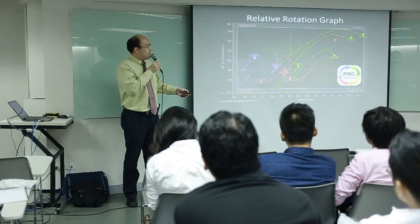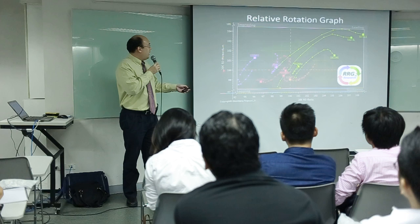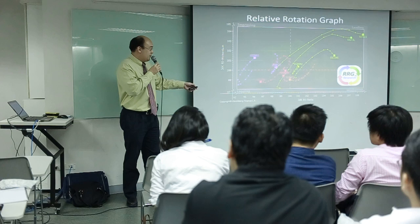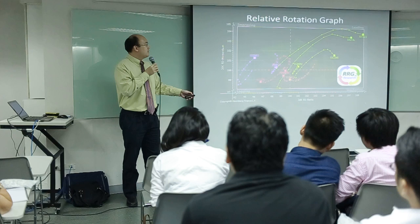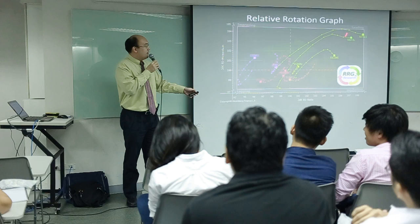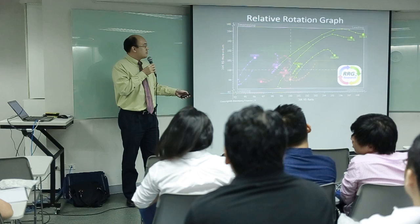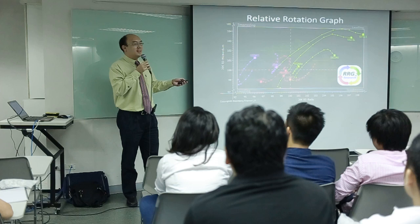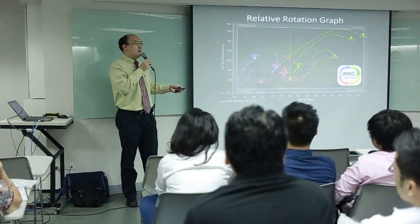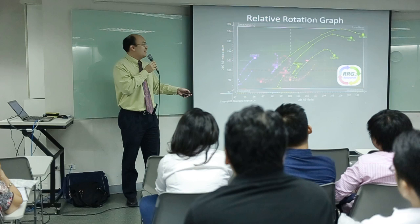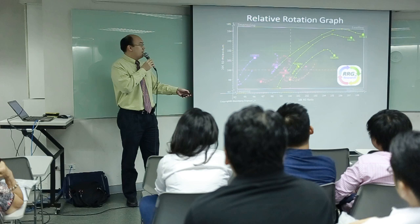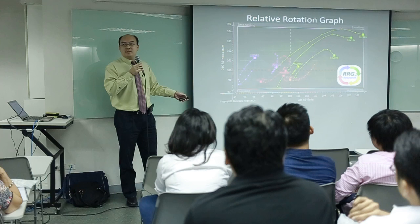On this quadrant, it plots the leading stocks and the leading sectors — those with improving momentum and improving relative strength. This is the strongest quadrant. Then there is the weakening quadrant, the lagging, and the improving. According to the creator of this indicator, you want to buy stocks or get into sectors as they cross into the strong quadrant, and you want to avoid stocks or sectors that enter the lagging quadrant.